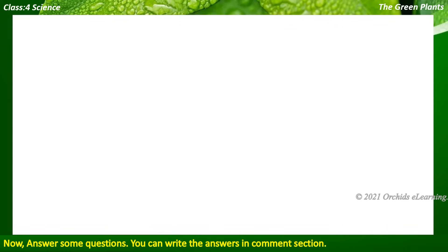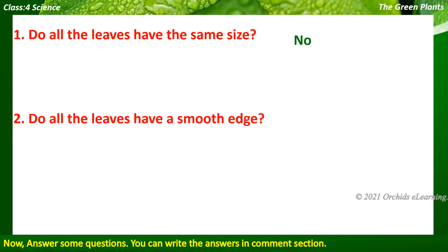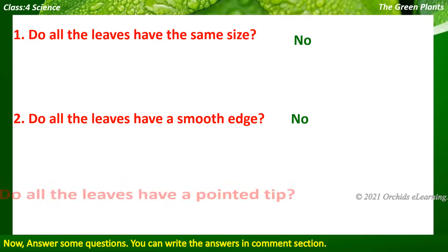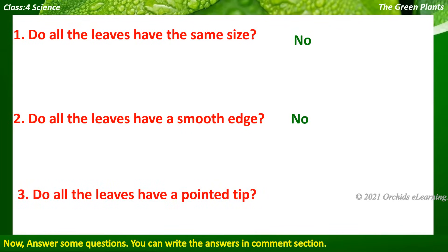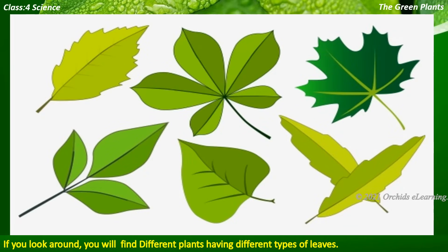Now answer some questions. Do all the leaves have the same size? No. Do all the leaves have a smooth edge? No. Do all the leaves have a pointed tip? No. If you look around, you will find different plants having different types of leaves.